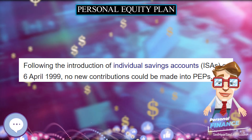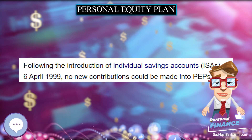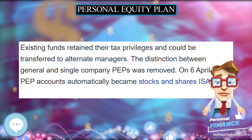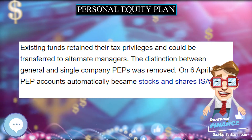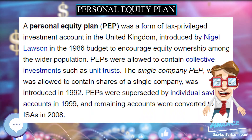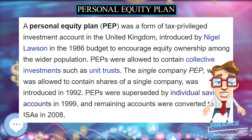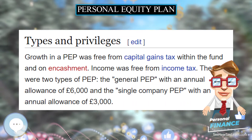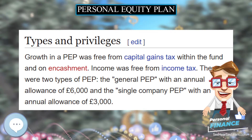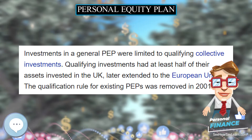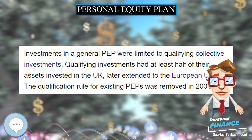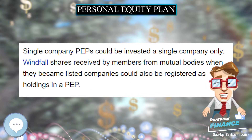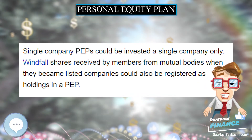Investments in a general PEP were limited to qualifying collective investments. Qualifying investments had at least half of their assets invested in the UK, later extended to the European Union. The qualification rule for existing PEPs was removed in 2001. Single company PEPs could be invested in a single company only. Windfall shares received by members from mutual bodies when they became listed companies could also be registered as holdings in a PEP.